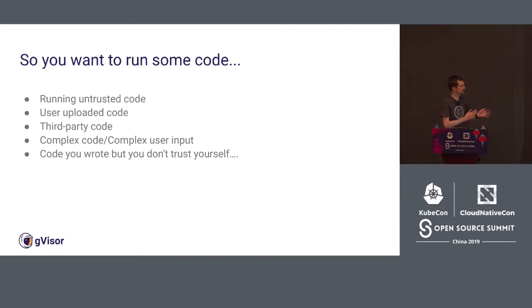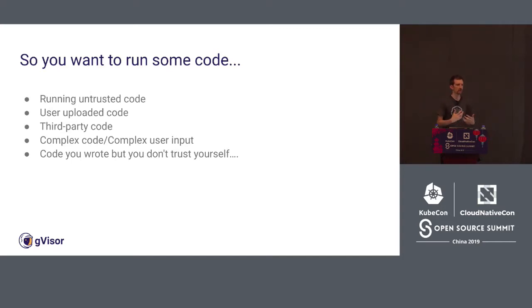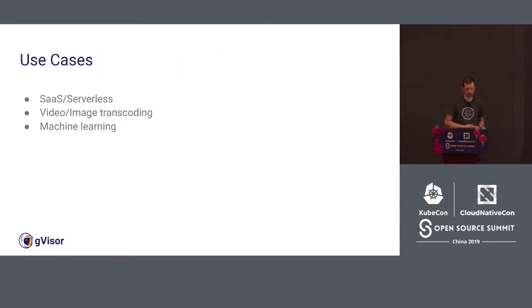Another case is running code on complex user input — things more likely to have vulnerabilities, like things that take untrusted user input and do something complicated with it. That might be video encoding, image encoding, or machine learning. Or you might have code you wrote yourself and don't trust your own abilities to keep it safe and secure, so you want to sandbox that code. Typical business use cases include SaaS, serverless, video/image transcoding, machine learning, and third-party vendor code.